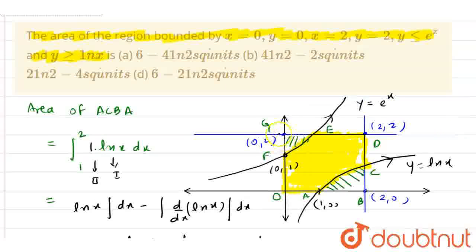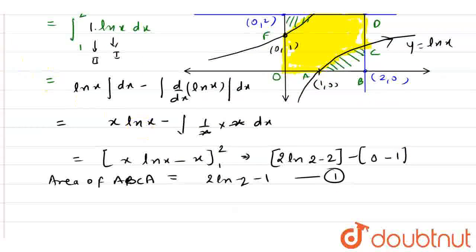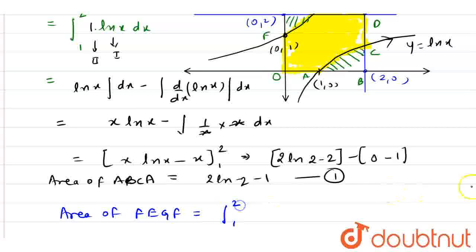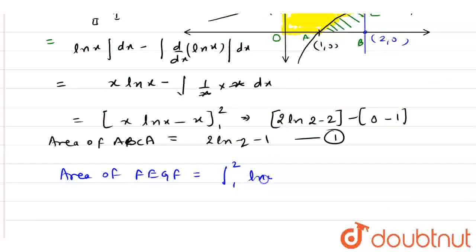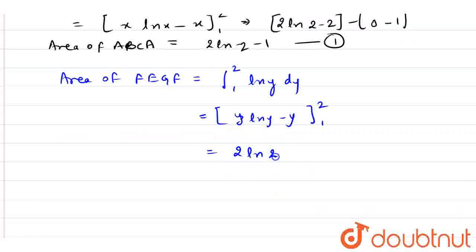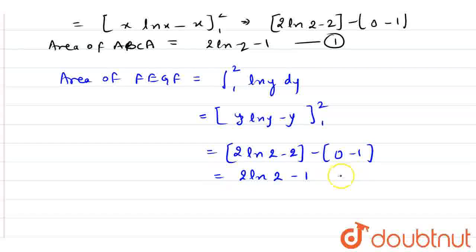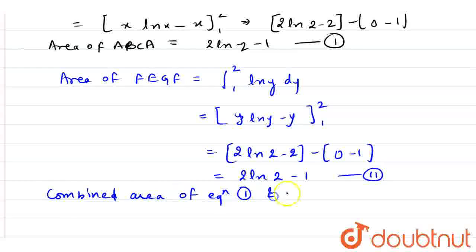Similarly, I am going to find the area of region FGEF. That area is given by the integral from 1 to 2 on the y-axis. We find the value of x from the curve — taking log both sides gives x equals ln y. So we have the integral of ln y dy. Integration of ln y is y·ln y minus y, with limit 1 to 2. Putting in the upper limit: 2·ln 2 minus 2 minus (0 minus 1), giving 2·ln 2 minus 1. This is equation 2. The combined area of equations 1 and 2 is 4·ln 2 minus 2.